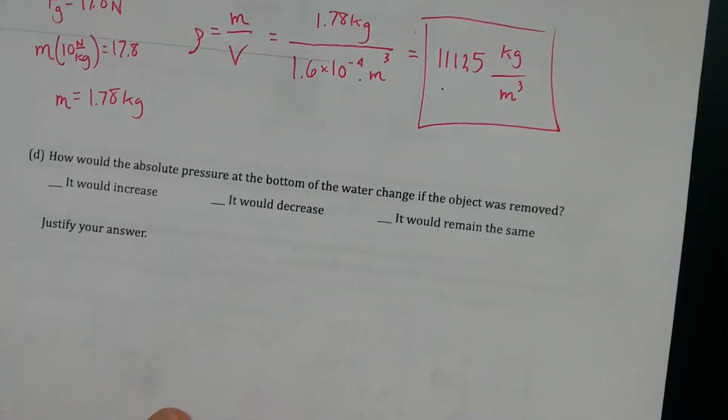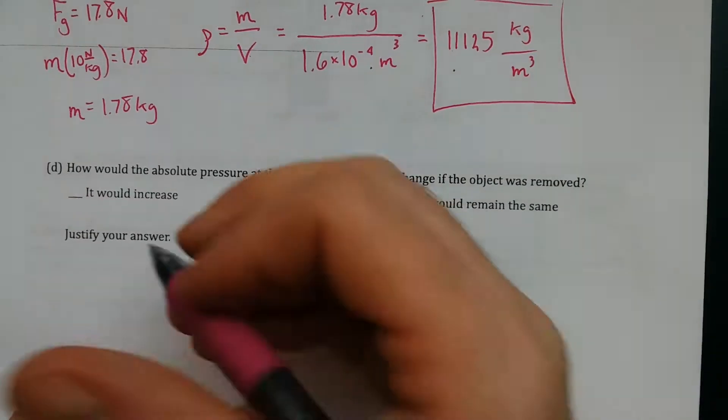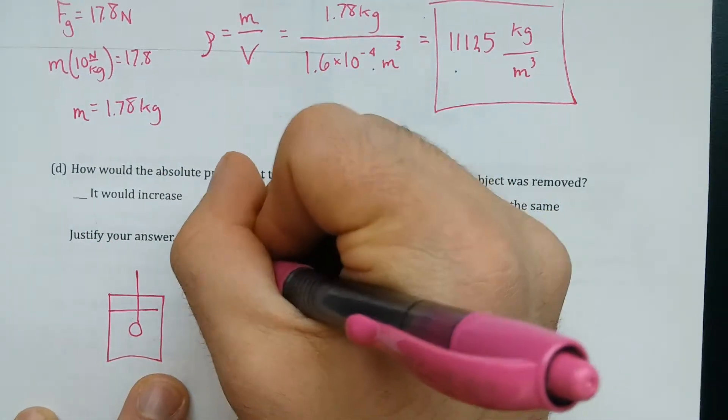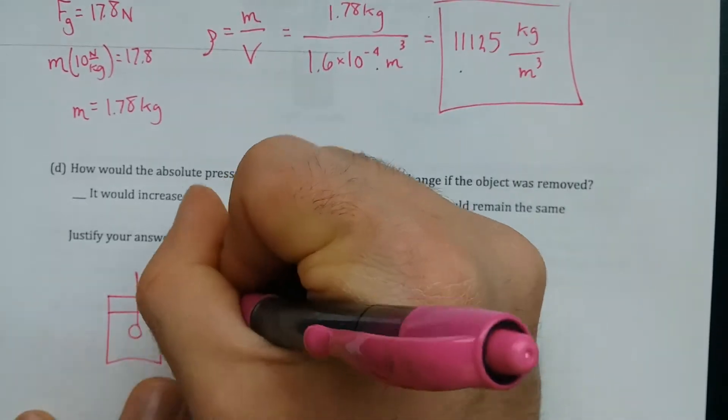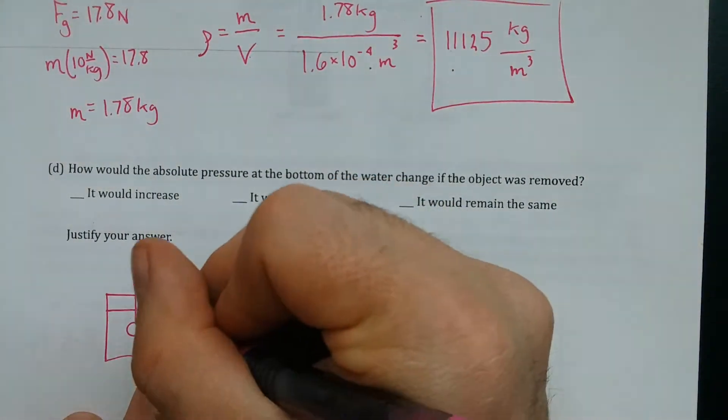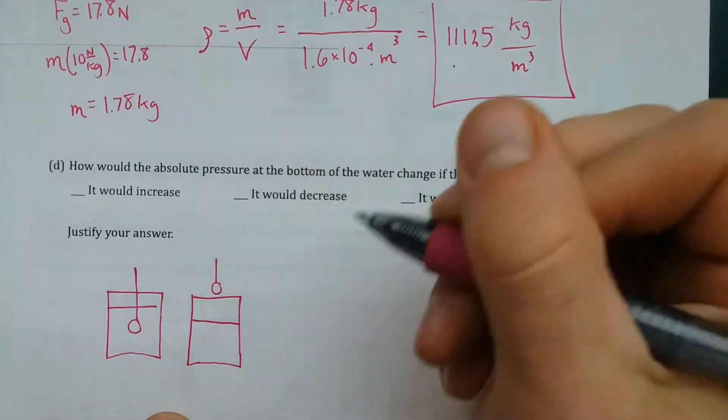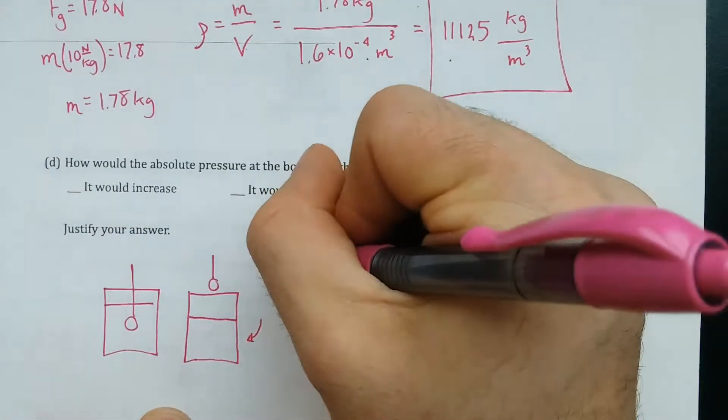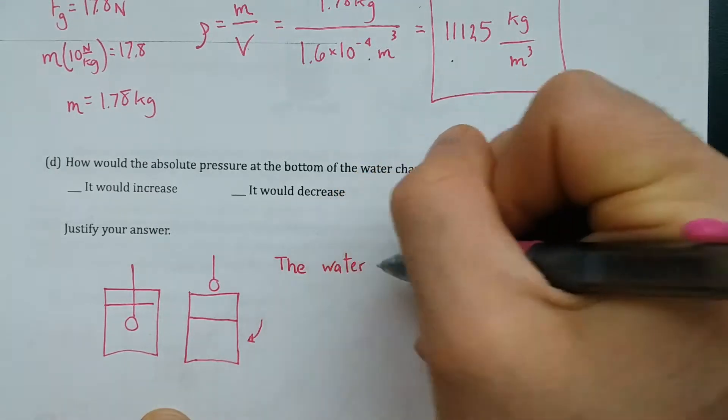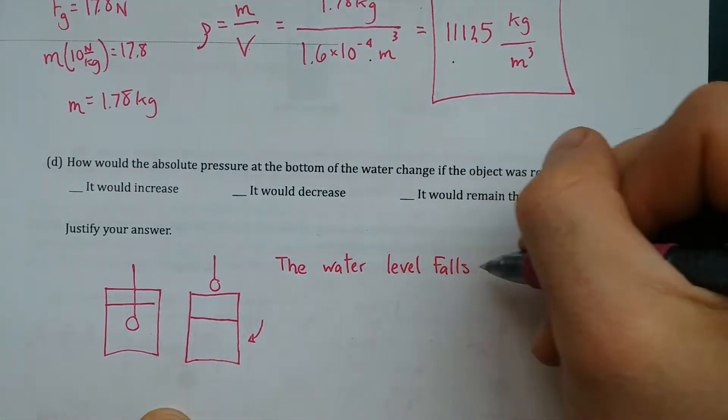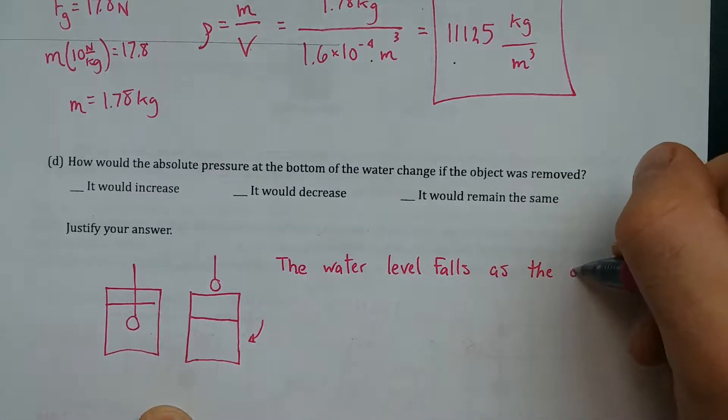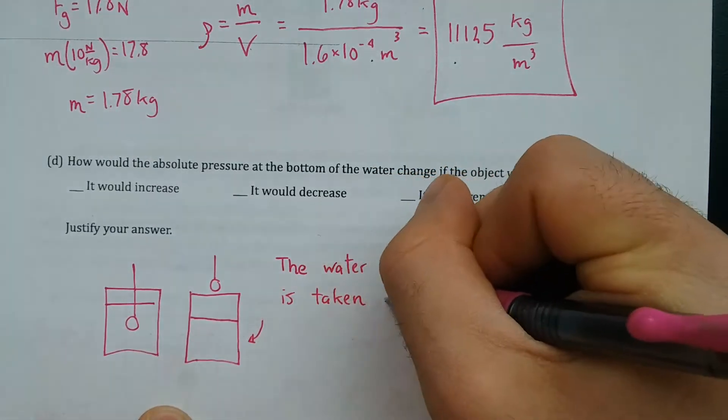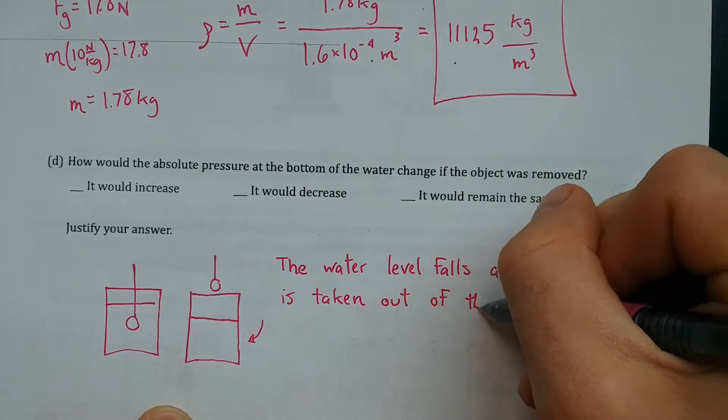And how would the absolute pressure at the bottom of the water change if the object was removed? Well, if the object is completely submerged in the water, but then is taken out of the water, now it's not displacing this water, so the water is able to be where the object was before. So the water level is going to fall.